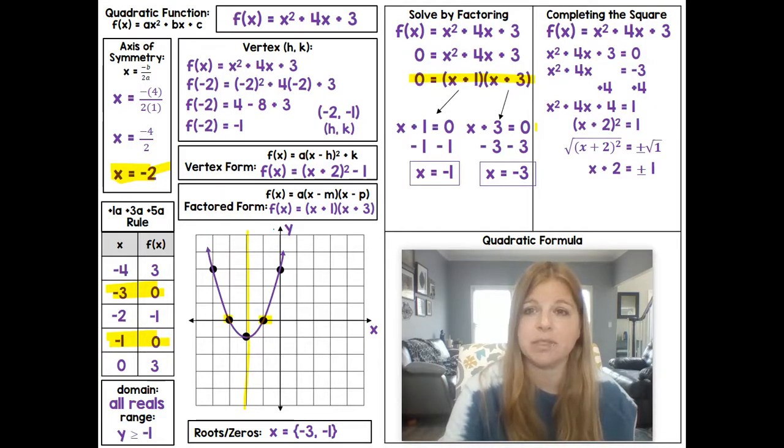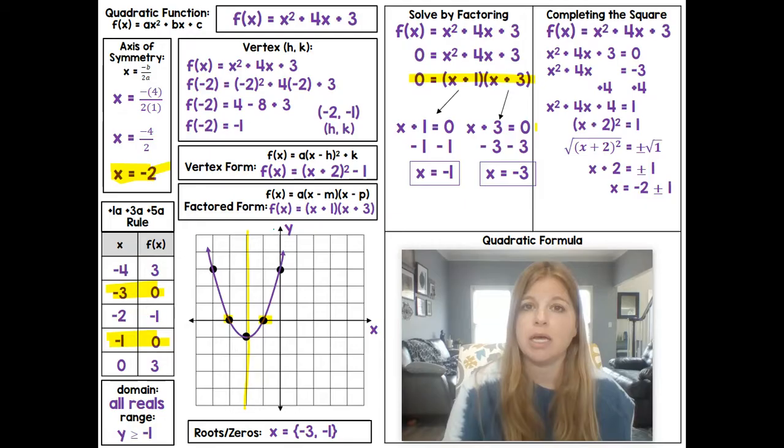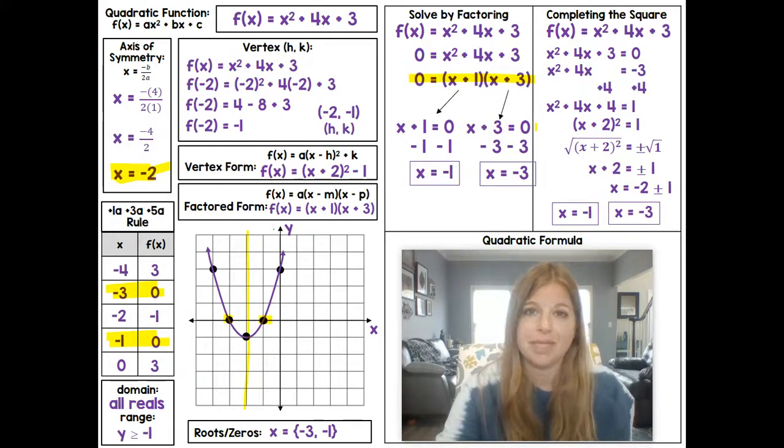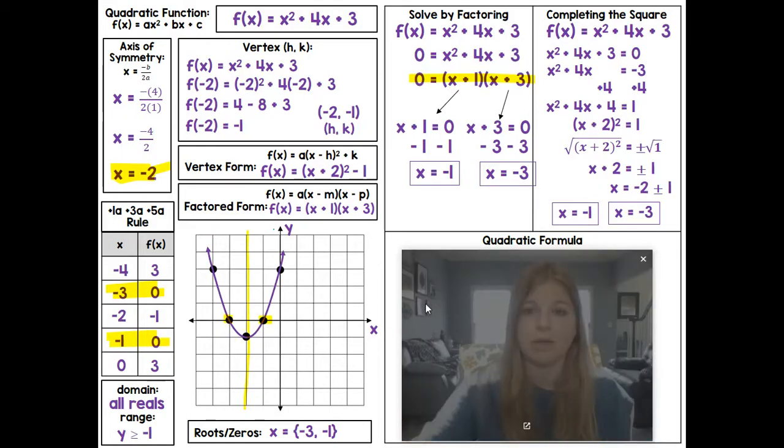We now want to get x by itself, so let's go ahead and subtract 2. And our equation looks like this: x = -2 ± 1. Now remember, we use the plus sign to get the first solution, the minus sign to get the second solution. -2 + 1 is -1. Then we use the minus sign. -2 - 1 is -3. We have our two solutions. The exact same solutions we got by factoring, which were the exact same solutions we got when we graphed.